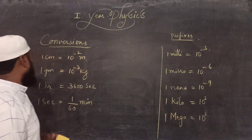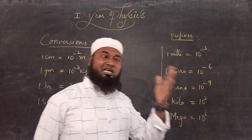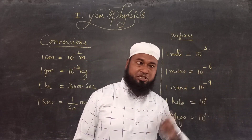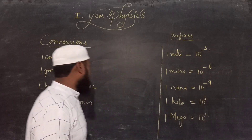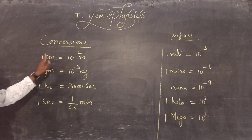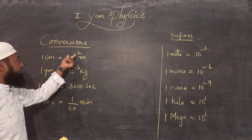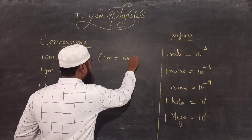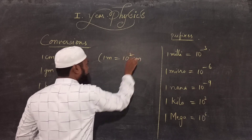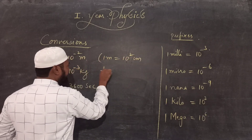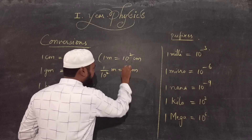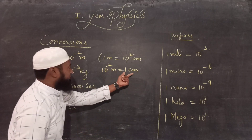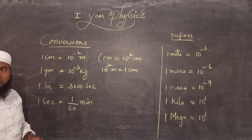The next part is conversions. In physics, we require to convert numbers from one system of unit to another. If you want to convert one centimeter into meter, you multiply by 10 to the power minus 2. How? Because 1 meter equals 100 centimeters, and 100 can be written as 10 squared. Taking 10 squared to the other side gives 1 by 10 squared meter equals 1 centimeter, so 1 centimeter equals 10 to the power minus 2 meters.